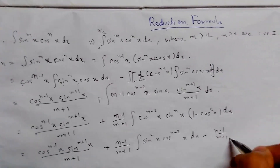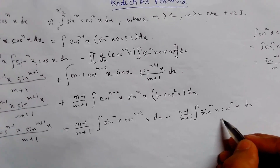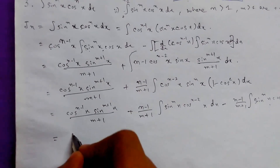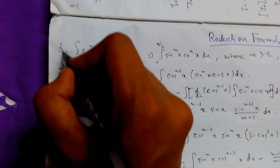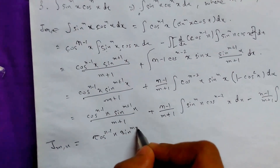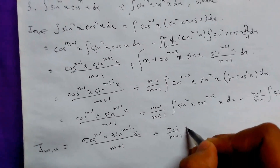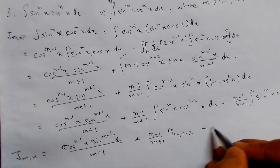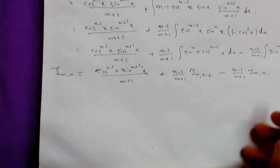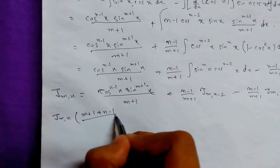This will be (n-1)/(m+1) times the integration of sin^m(x) cos^n(x) dx. We see that this is J(m,n). So writing J(m,n): it equals cos^(n-1)(x) · sin^(m+1)(x) upon (m+1), plus (n-1)/(m+1) times J(m, n-2), minus (n-1)/(m+1) times J(m,n). We take the J(m,n) term to one side and simplify.